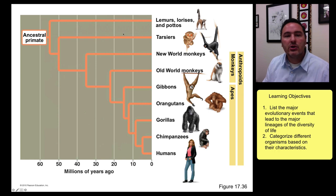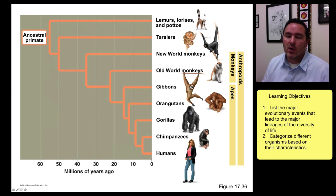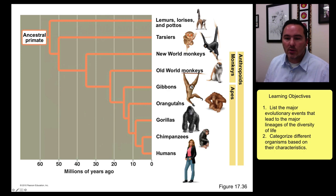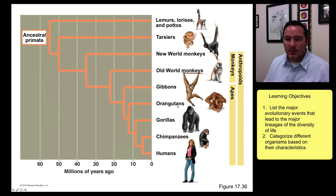There's been a huge diversification of primates. The original ones looked more like the lemurs and lorises, then you get the new world monkeys that have tails. Eventually you come to the old world monkeys with loss of the tail, and then you have the great apes — which includes orangutans, gorillas, chimpanzees, and humans.